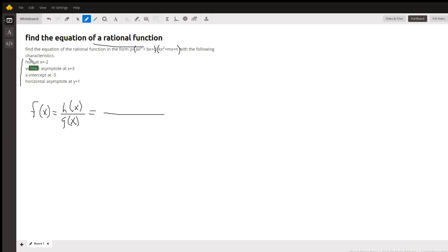Okay, now let's add the hole at the end, and you'll see why in a second. So if there's going to be a vertical asymptote at x equals 3, that means there's a factor in the denominator of x minus 3.